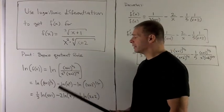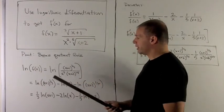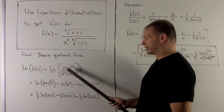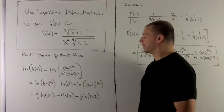So to start off, we're just going to take the natural log of both sides of the equation here. So natural log of f is equal to the natural log of x plus 1 to the one-third, over x squared times x plus 2 to the one-fifth.